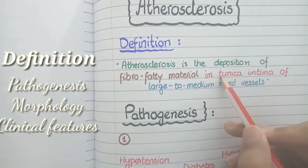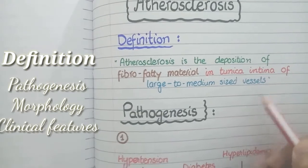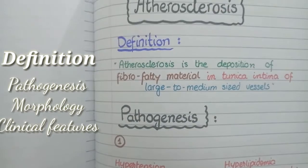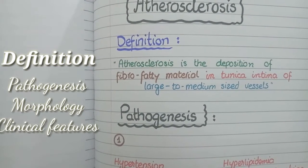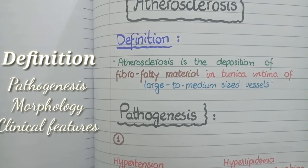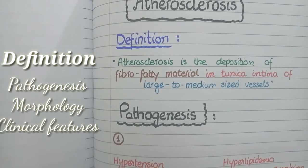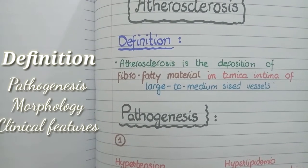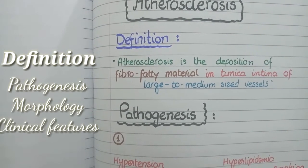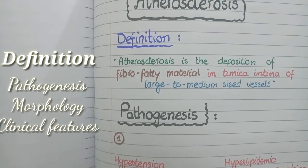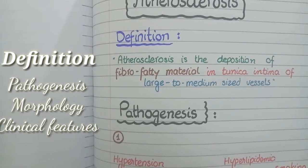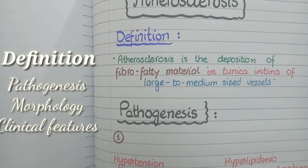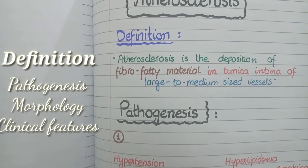The second keyword is tunica intima of the vessels. Blood vessels are made up of three layers: the innermost layer is tunica intima, the middle layer is tunica media, and the outermost layer is tunica adventitia. Atherosclerosis specifically affects the tunica intima and does not affect tunica media or tunica adventitia.